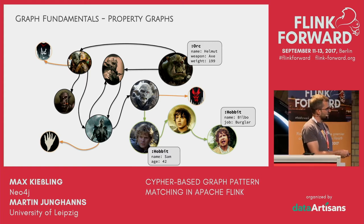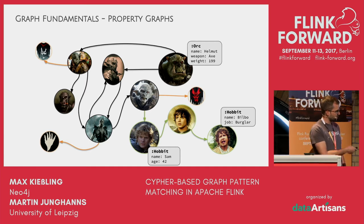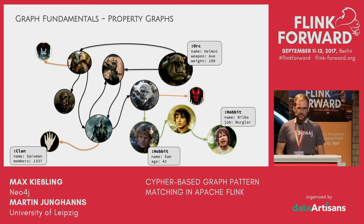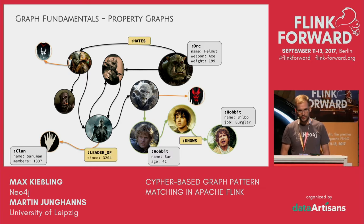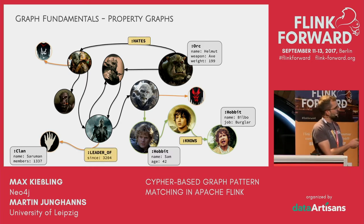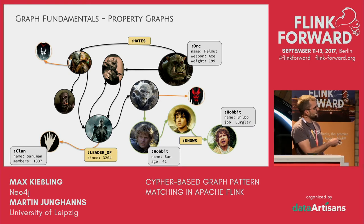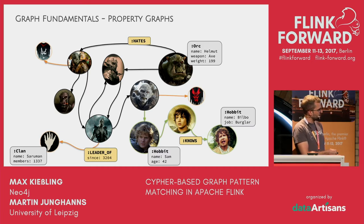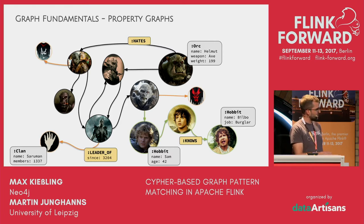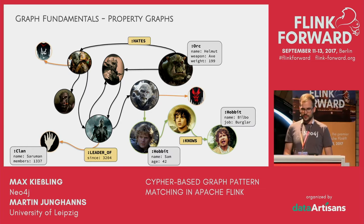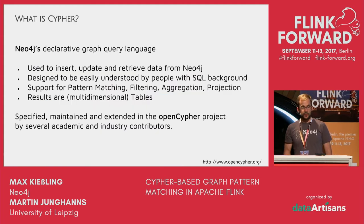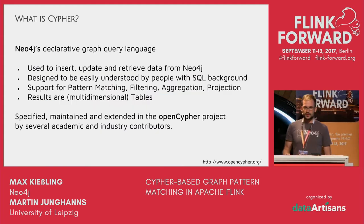Those two hobbits have different properties attached to them. We also have clans here. The same applies for edges, which we also call relationships — because that's what they express. A relationship is always directed, with a start vertex and an end vertex. We have the hates label, the leader-of label, and knows label, for example. Edges can also have properties, such as a creation date on a particular leader-of edge.